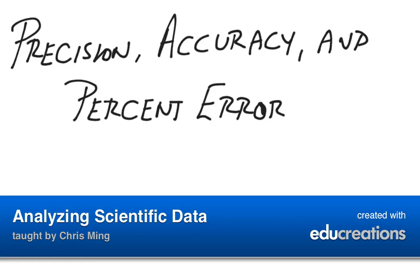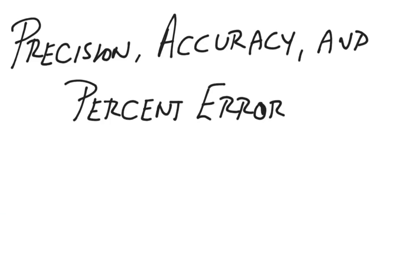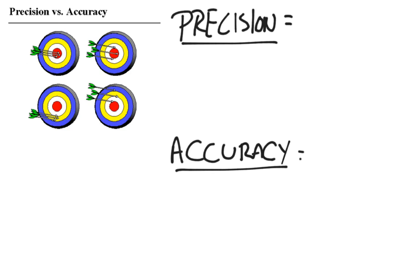This video deals with the importance of analyzing data obtained during experimentation. It deals with precision, accuracy, and percent error. Precision and accuracy are two terms used almost synonymously in society, but they have big differences.